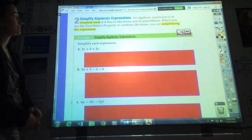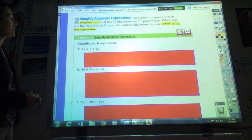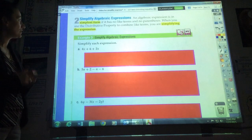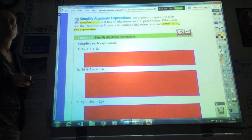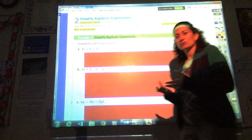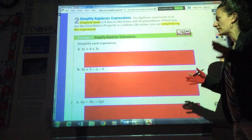I'm going to read this up here. An algebraic expression is in simplest form if it has no like terms and no parentheses. When you use the distributive property to combine like terms, you're simplifying. So simplifying an expression is another way of just getting it to the point where you have no like terms and no parentheses.